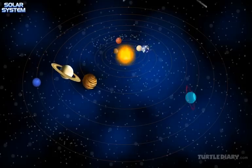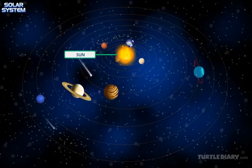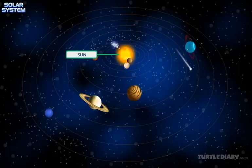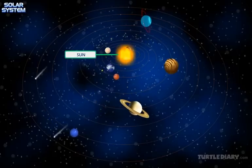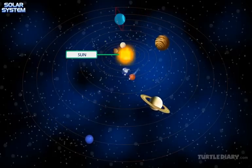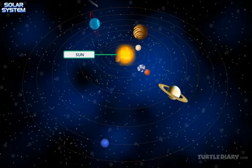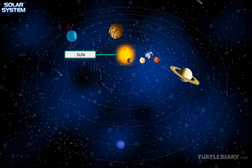All these bodies revolve around the sun because of the gravity of the sun. Gravity of the sun is a force that pulls the objects toward the center of the sun. The sun is the only star in our solar system.